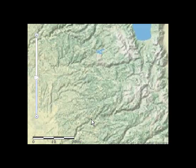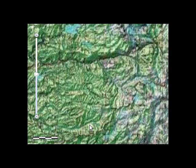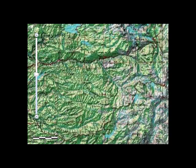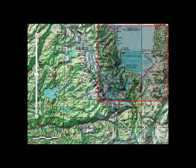If I zoom in a little bit more, I'm going to start to see some content. This is content from the 1 to 250,000 scale USGS topographic map series. If I zoom in a bit more, I'm still seeing the 1 to 250,000 scale series topographic map content.